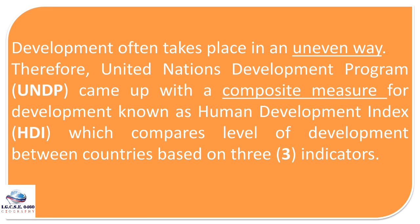It is for this reason that the United Nations Development Programme (UNDP) came up with a composite measure for development known as the Human Development Index (HDI), which compares levels of development between countries based on three indicators. Before we look at those three indicators, we need to understand the meaning of the word 'composite.' Composite means combined together — different indicators are combined to get one figure, which is the HDI figure.